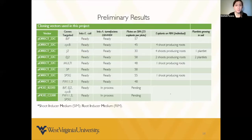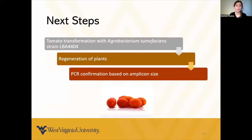Until now, these are my preliminary results. We have been performing a lot of transformations for all the genes — the single knockouts — and we are still going to continue with the multiplex knockout. The next step is to keep going with Agrobacterium tumefaciens transformation on the tomato cotyledon tissue, wait for proper plant regeneration, and then confirm these mutations by PCR.